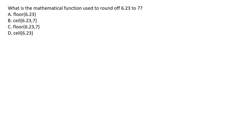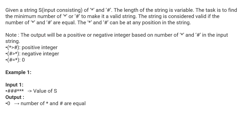What is the mathematical function used to round off 6.23 to 7? Since we are incrementing the value, we use the ceil() function. There are two syntaxes shown; the correct one is option D, where ceil() takes only one argument — the number to be rounded off.